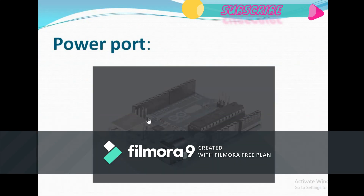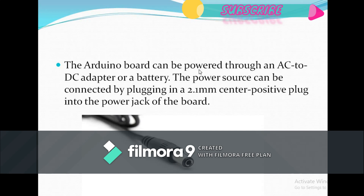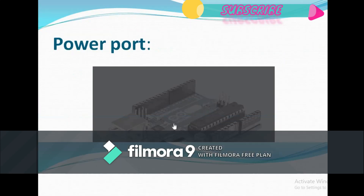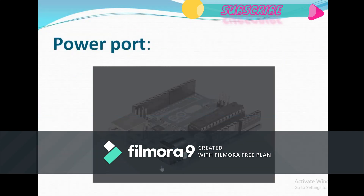The next component is the power port, which provides power to the Arduino board. The Arduino board can be powered through an AC/DC adapter or a battery. The power source is connected by plugging in a 2.1 mm center-positive plug into the power jack of the board.